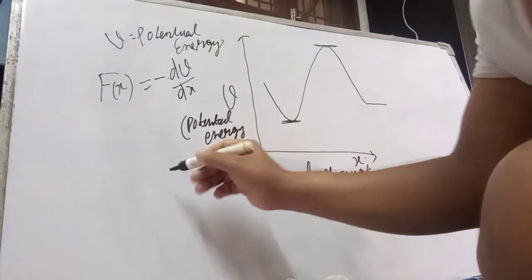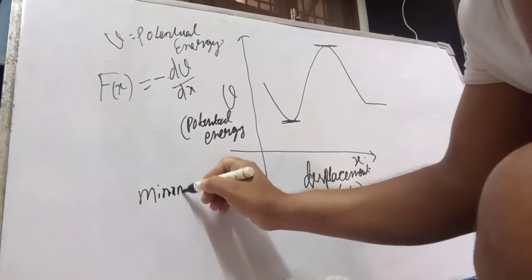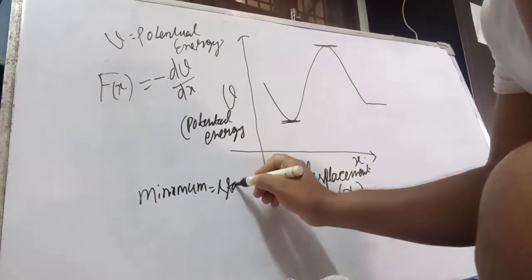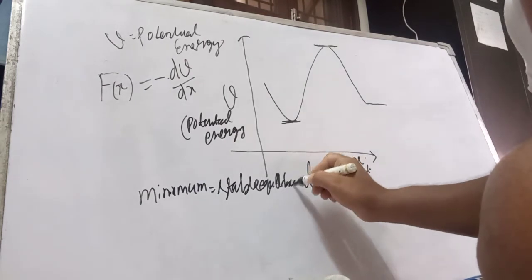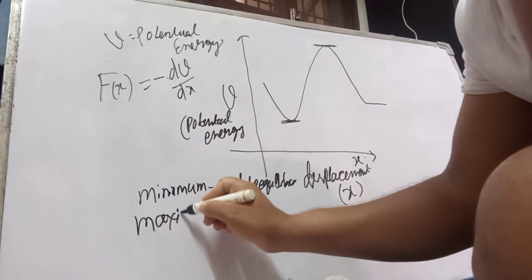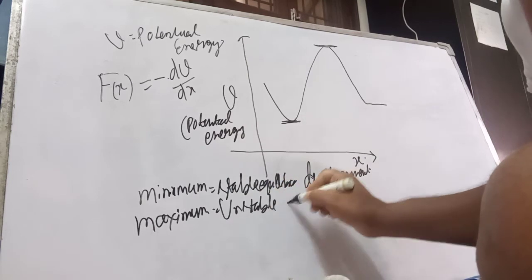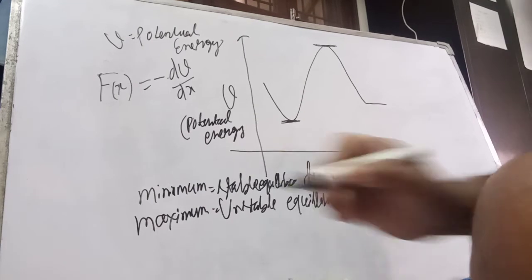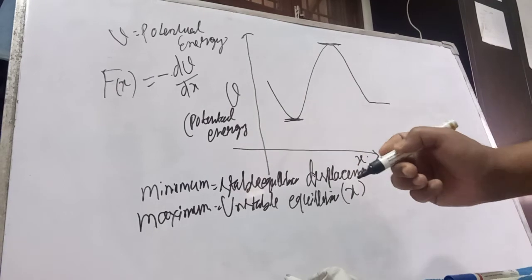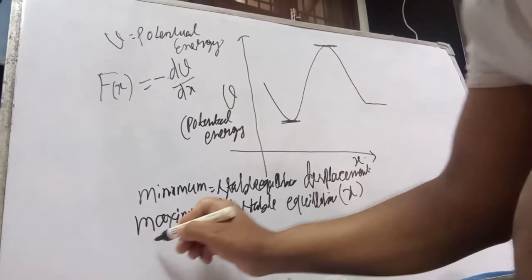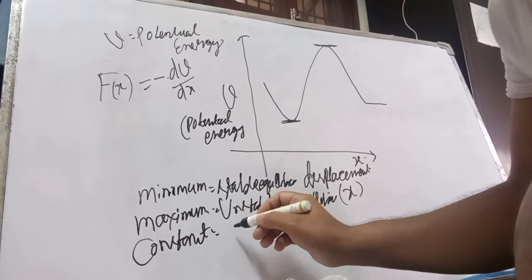In potential energy, at the minimum point we call this stable equilibrium. At the maximum point, it is unstable equilibrium. And at a constant position, it is called neutral equilibrium.